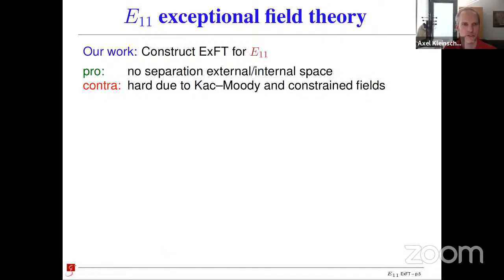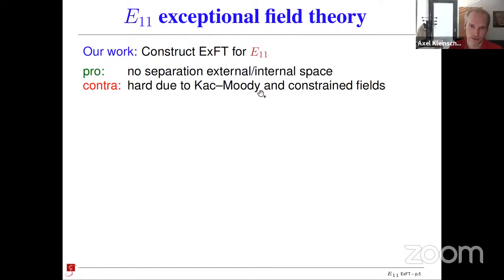With this introduction, let me summarize what we set out to do and what we achieved. We wanted to construct exceptional field theory for the symmetry group E_{11}. One reason is that you no longer have to distinguish between external and internal space — everything is one big unified object. The difficulty is that E_{11} is a Kac-Moody symmetry group in the general Kac-Moody sense, not the affine sense, and there are complications related to the constrained fields I just mentioned. These are why we had to work quite a bit, but eventually we succeeded.